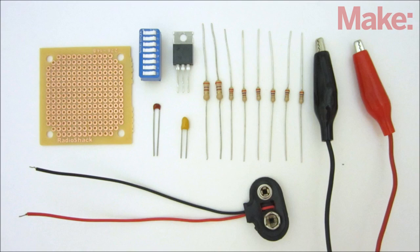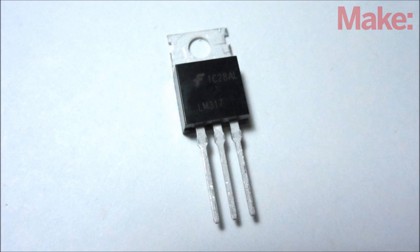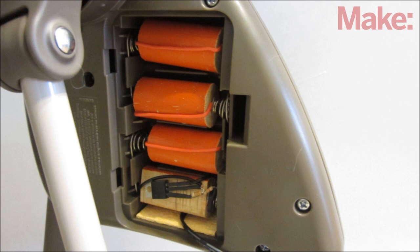Here are the parts that you need for this project. This circuit uses an LM317 variable voltage regulator. This is the same regulator IC that I used in my project on how to replace batteries with an AC power adapter.